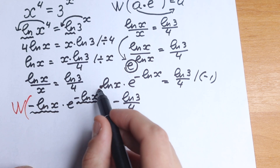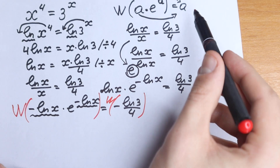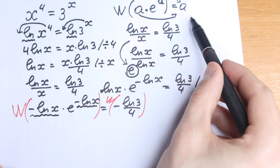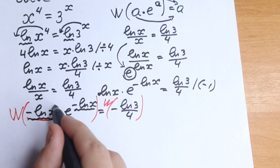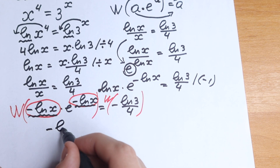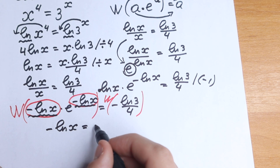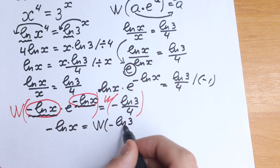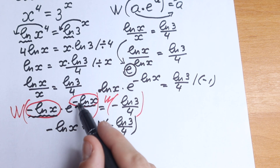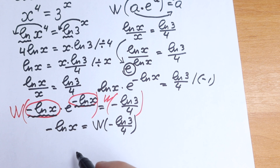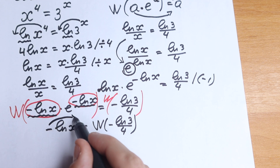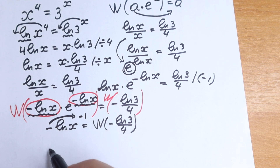If we apply the Lambert W function to this expression, since a times e to the a gives back a, in our case a equals minus natural log x. So we have minus natural log x equal to Lambert W of minus natural log 3 over 4. We don't have the e or the power anymore — we have only minus natural log x. We can express this as x to the power minus 1, and apply e to both sides to cancel the natural log.